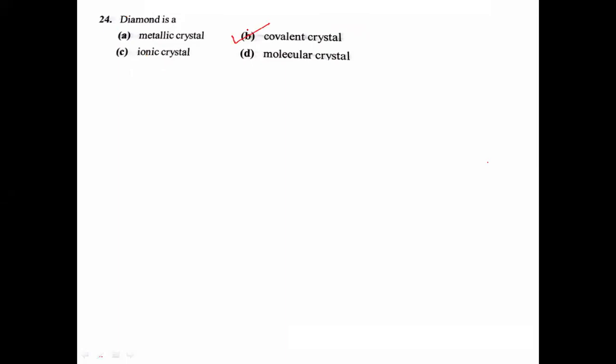Diamond - is it a metallic crystal, covalent crystal, ionic, or molecular? There is a dense network of carbon present in diamond. So it comes under covalent crystals.